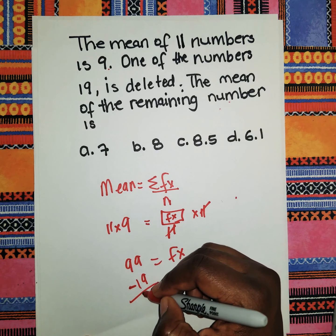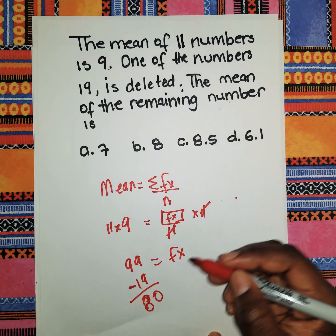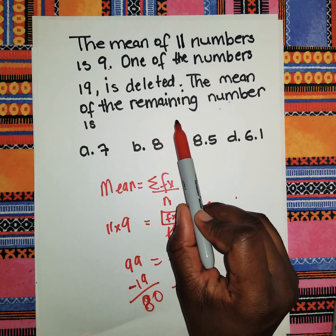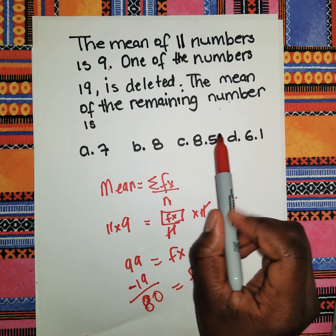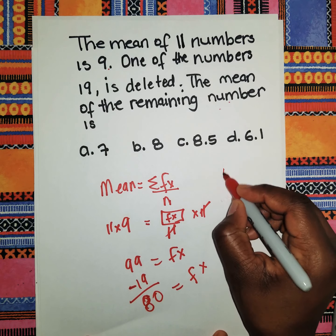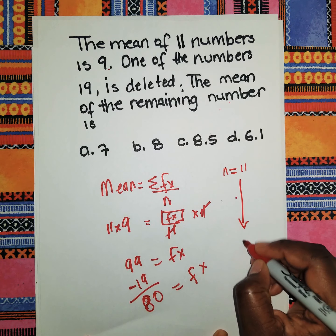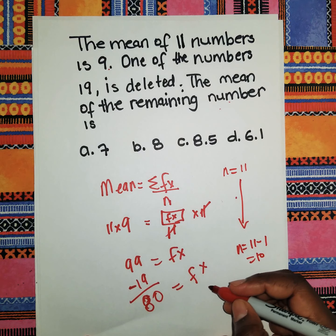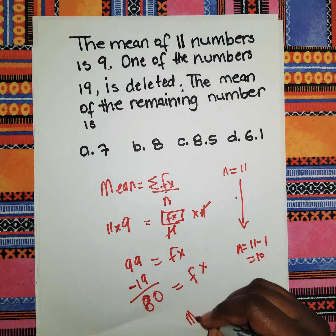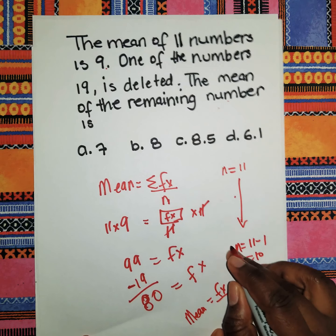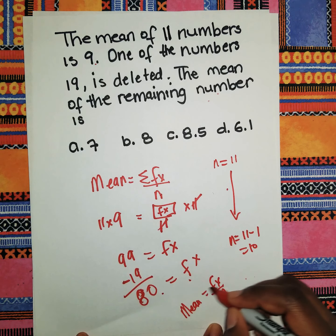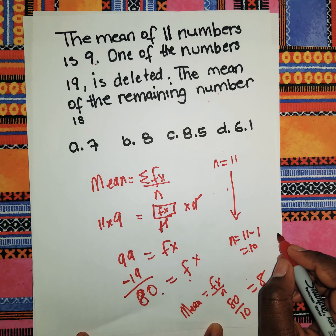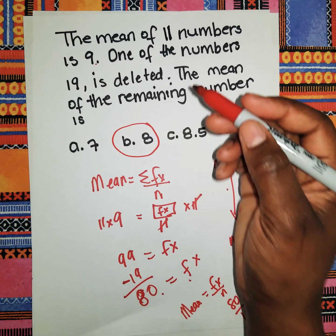Since 19 is removed, the new sum is 99 − 19 = 80. With one number removed, n is now 10. So the new mean = 80 ÷ 10 = 8.